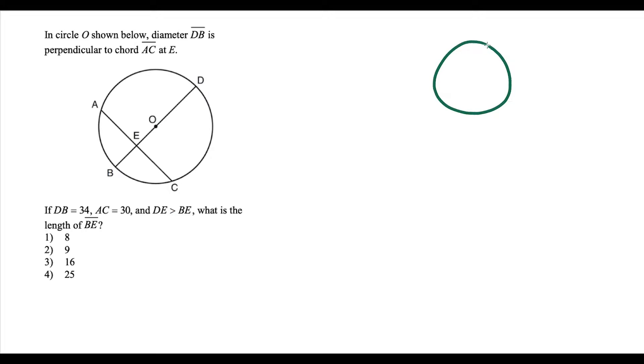Just know anytime you have a diameter and you're told that that diameter is perpendicular to some chord, so they intersect at 90 degrees, then that diameter is going to cut the chord in half. So each of those segments would be the same.